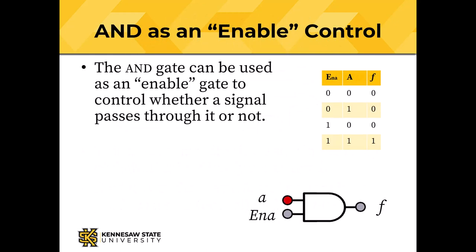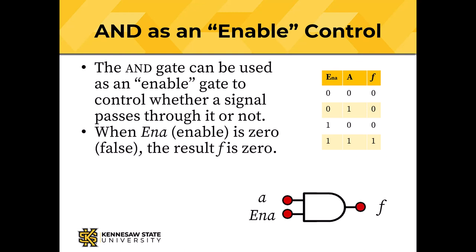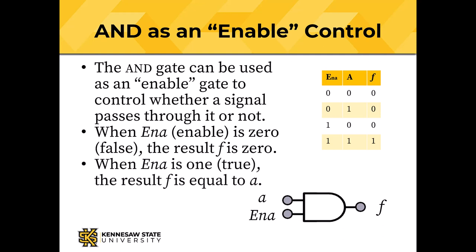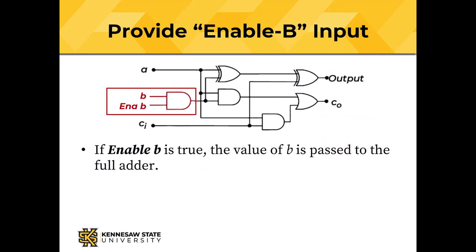Remember from our study of gates that the AND gate can function as an enable control — it can control whether a signal passes through it or not. When the enable signal is 0 or false, the output f is 0 no matter what appears on A. If the enable input is true, the output equals whatever appears on A. We can use that AND gate to provide an enable B input. We connect the output of the AND gate to the B input of our full adder. If enable B is true, the value of B is passed to the full adder. If enable B is false, the B input to the adder will be 0, which lets us copy A from input to output by adding 0.